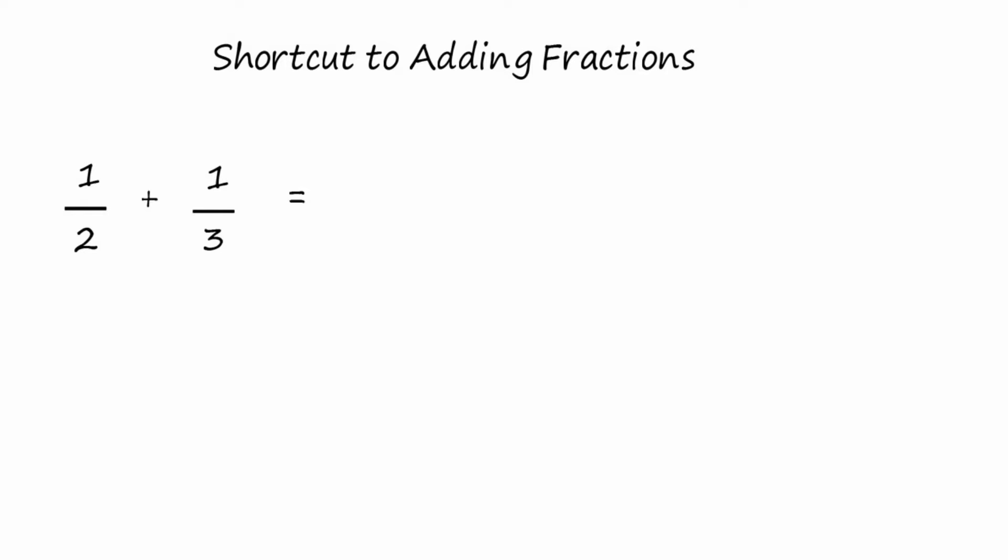To do the shortcut method, you take the number first in the upper left-hand corner, in this case the one, and multiply by the number in the lower right-hand corner, the three. And that goes in the numerator of the answer, one times three is three.